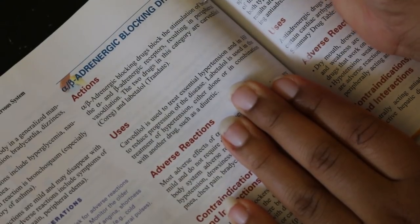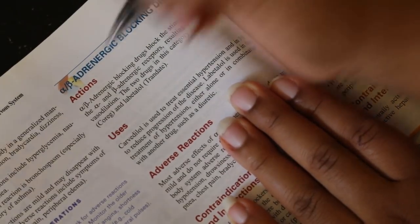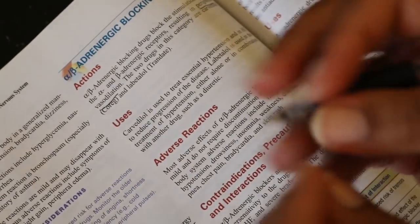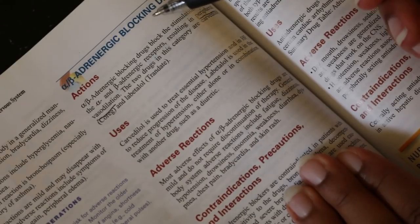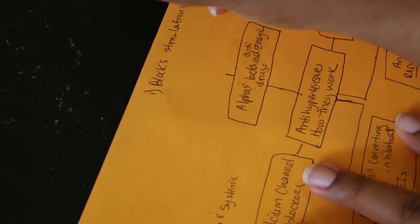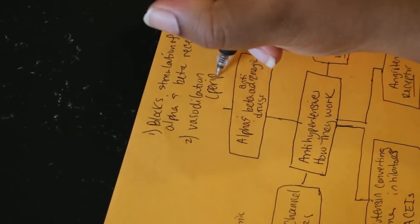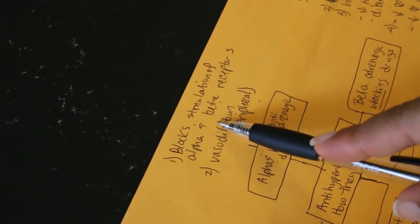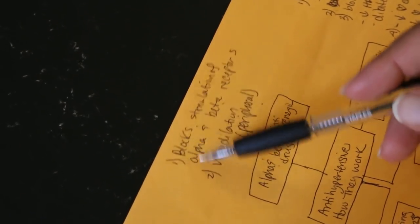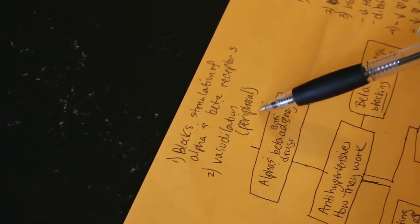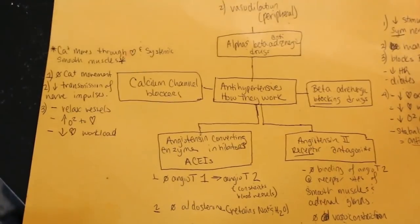The last class — alpha-beta blockers — blocks the stimulation of both alpha and beta adrenergic receptors, which results in peripheral vasodilation. Remember, if we open up those blood vessels we reduce blood pressure. Beta receptors are mainly found on the heart; alpha receptors are found throughout the peripheral body — outside the heart. Blocking both results in peripheral vasodilation and thus lower blood pressure.